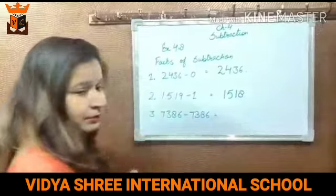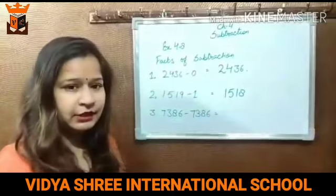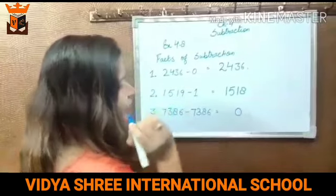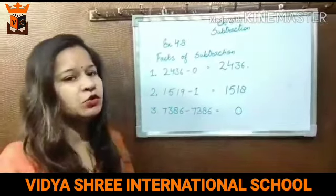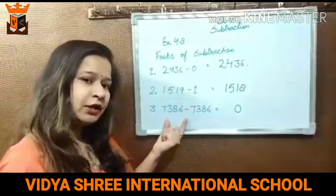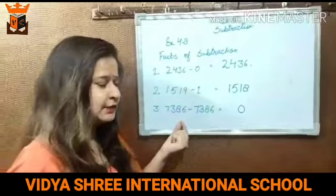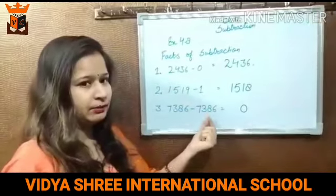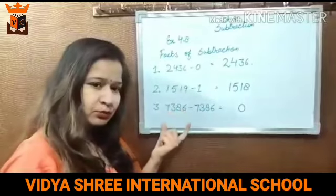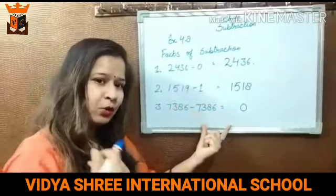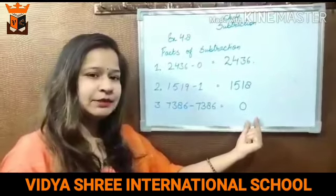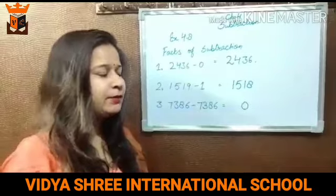Agar aap kisi number me se same number ko deduct karte hai, subtract karte hai, answer will be 0. Aap ek me se ek hi less karte hai, to 0 milta hai. For example, 7386 me se 7386 ko less karte hai — meri paas kuch amount thi, us mein se maine puri amount de di, to meri paas kuch bhi nahi bacha. Answer is 0.